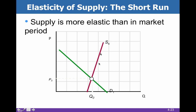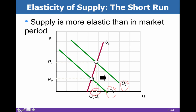In the short run, we don't have that vertical supply curve — it is upsloping as we'd expect. When demand increases from D1 to D2, we now have an increase in quantity supplied. Part of this demand increase is absorbed through an increase in quantity, and part is absorbed through an increase in price. We could also choose to plant fewer crops and decrease quantity supplied if demand falls.